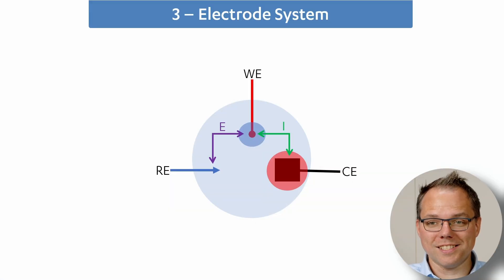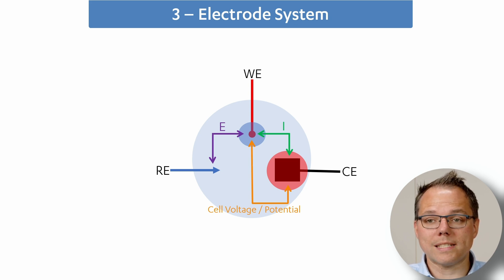There's one thing that many people don't pay attention to or are not constantly aware of: there is a potential between the working electrode and the counter electrode to drive exactly that current. That potential is adjusted so the current can flow that will guarantee the potential between the working and reference electrode. That potential that we apply between the counter and working electrode is the cell voltage or cell potential.